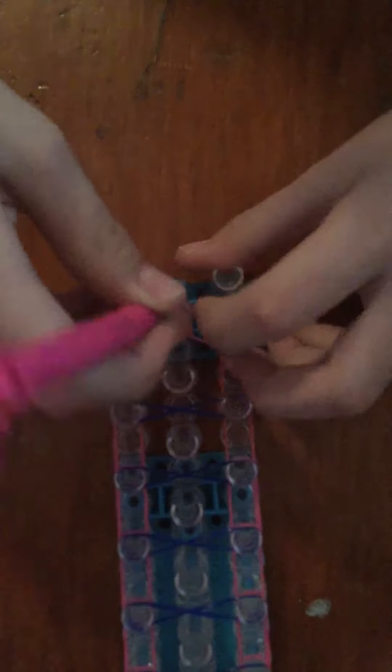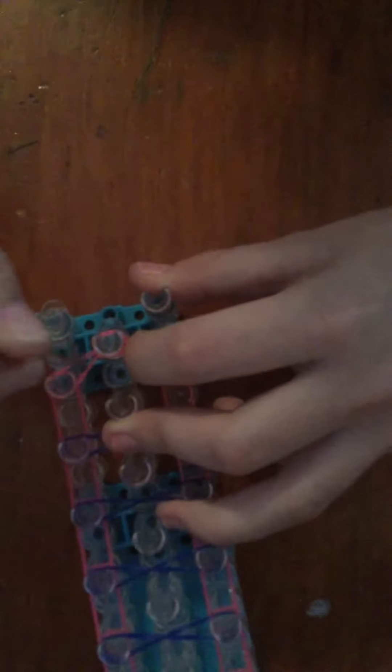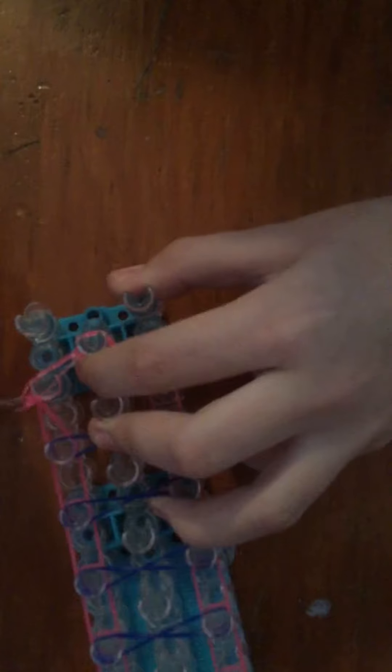Now grab your hook. You will grab the bottom band from the top pin and hook it onto the next pin so it looks like a teardrop. Do that on the other side too. You don't have to do anything special with the figure eight bands.